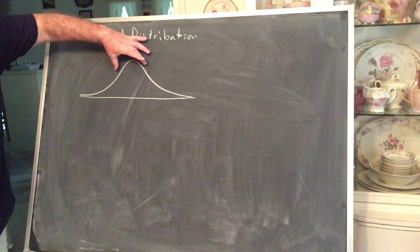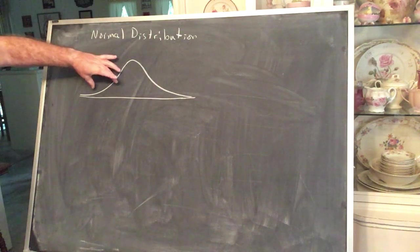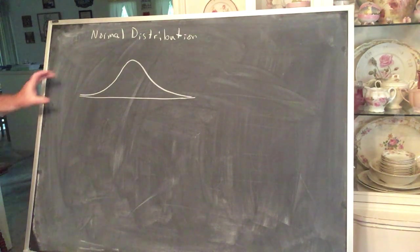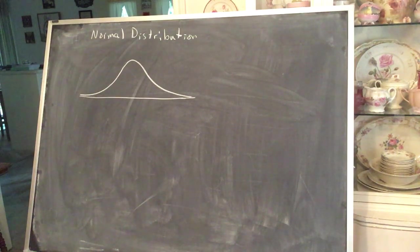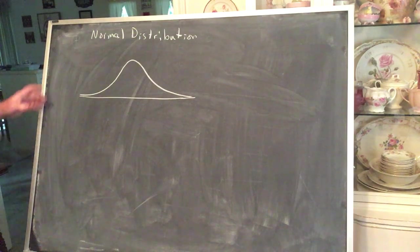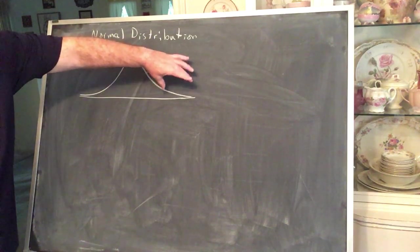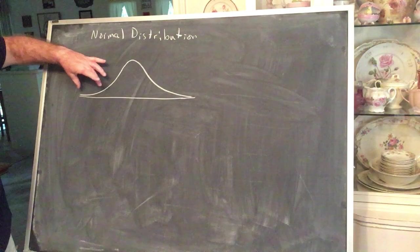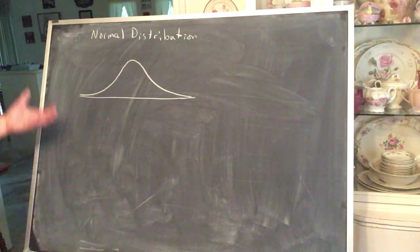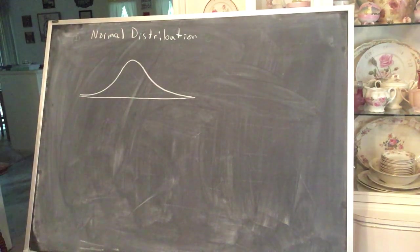There would be many, many people in the middle. The taller you go, there would be fewer and fewer. The shorter you go, there would be fewer and fewer. You can think of this as: the height of the curve above the axis corresponds to the quantity of the population in that region. For ordinary heights, that's where most of the data lie. For unusually tall or unusually small heights, that's where less of the data falls — that's why we call them unusual.